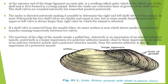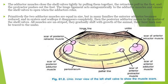If a shell valve is removed from the mantle lobe, its inner surface is seen, which shows marks of insertion and muscles running between the two valves. The insertion of the edge of the mantle marks a pallial line. Anteriorly there is an impression of the anterior adductor muscles; posteriorly is a large impression of posterior adductor muscles. Close to these impressions are marks of anterior retractor muscles and posterior retractor muscles. The valves are in closed and open conditions — the movement is basically due to the retractor and protractor muscles. In addition to this, the anterior and posterior adductor muscles are present.